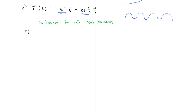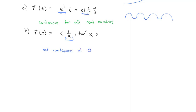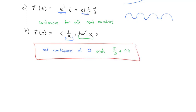Now a more interesting example: r(t) = (1/x, arctan(x)). The first component, 1/x, is undefined at zero — while the limit may exist approaching zero, the function itself does not — so it's not continuous at zero because of the asymptote. The second component, arctan(x), is undefined wherever tangent is undefined, which is when the x-coordinate of the unit circle is zero — that happens at π/2 and every nπ after. So we have two discontinuities coming from the two components.